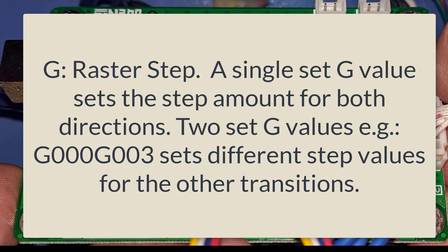The other command is g. This is never used with the c command. You can set either one or two g values. If one is set it'll be used for both the forward and back swing of a raster — it's the step amount in the Y direction when switching from right to left and left to right. If two g values are set, the step amount differs between the two directions, allowing unidirectional and bidirectional rastering.